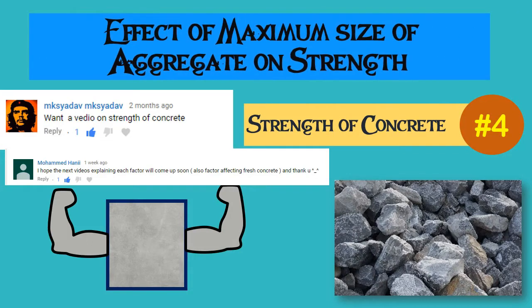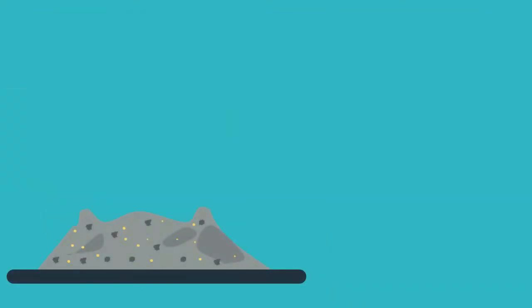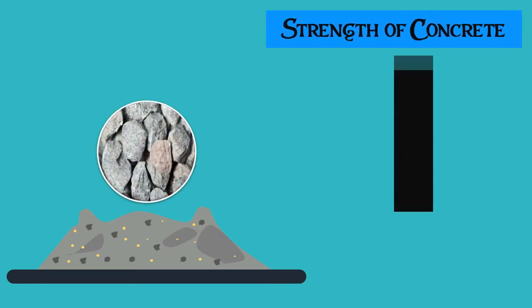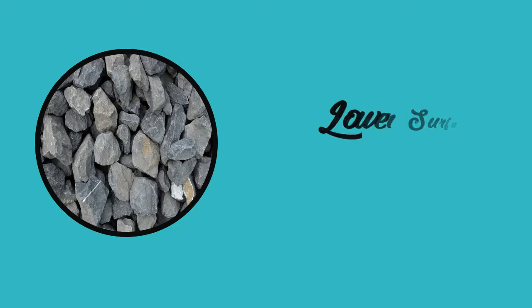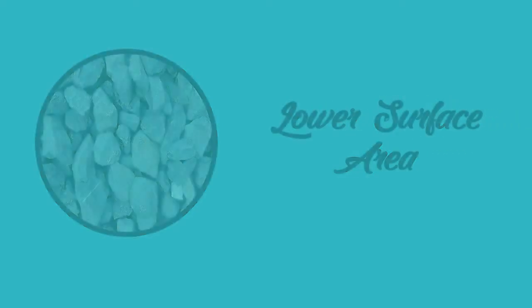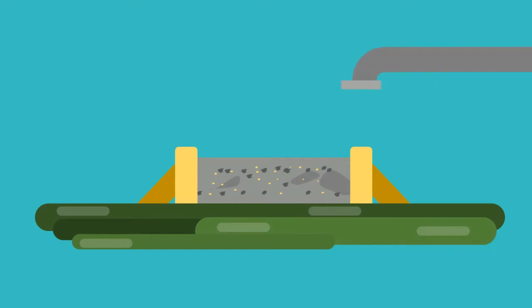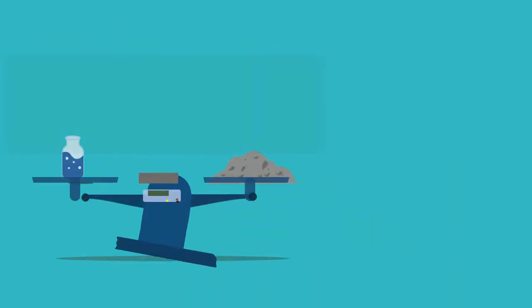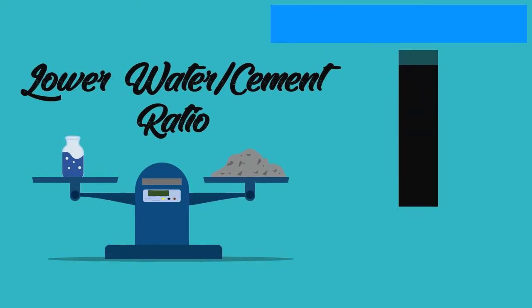Effect of maximum size of aggregate on strength of concrete. In earlier days, the researchers thought that the use of larger size aggregates leads to higher strength. They thought that the larger the aggregate, the lower is the total surface area. Thus, a less amount of water is required to get the desired workable concrete, so a lower water-cement ratio can be adopted to get higher strength.